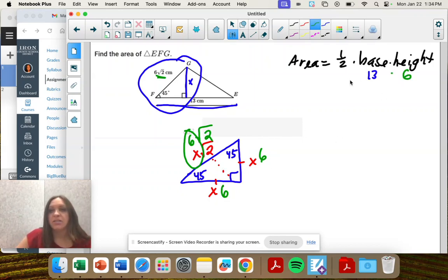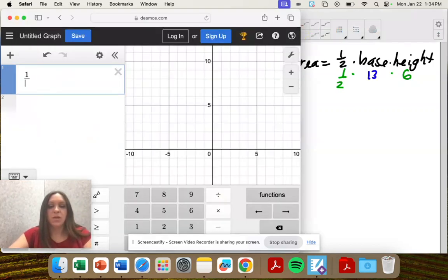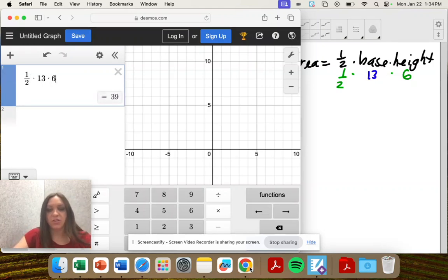So height is six and then times by one half. So one half times the base times the height, which is 39.